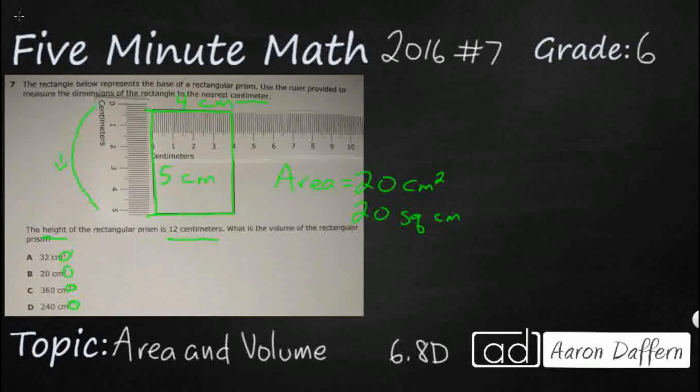Well, once we pull out our ruler and we measure this, if we actually stop to read this problem, look what it says. This rectangle with an area of 20 square centimeters is the base of a rectangular prism. So we've got this rectangular prism here. I'm going to draw this rectangular prism, and we see it's going to be three dimensions, and what we have here is just the base.